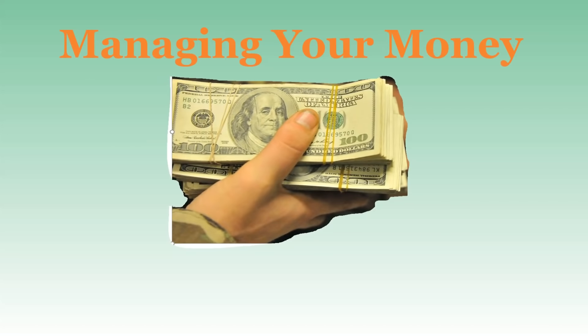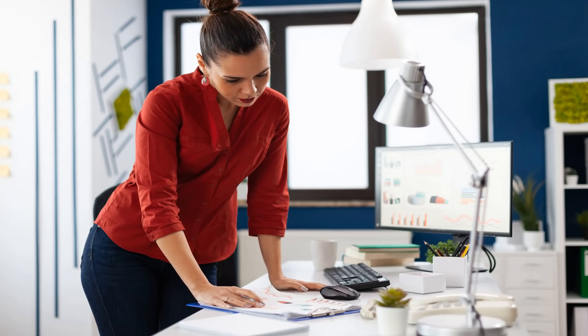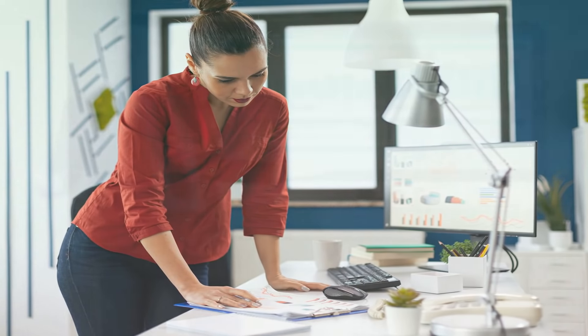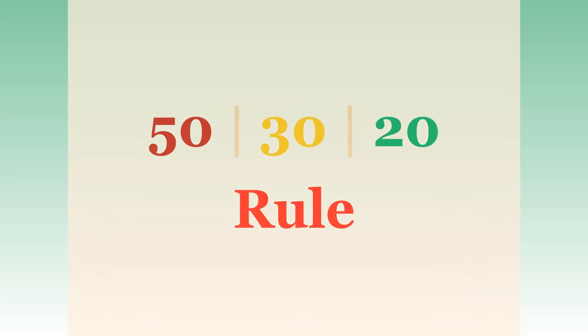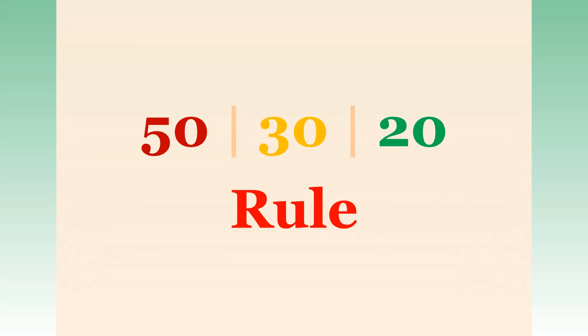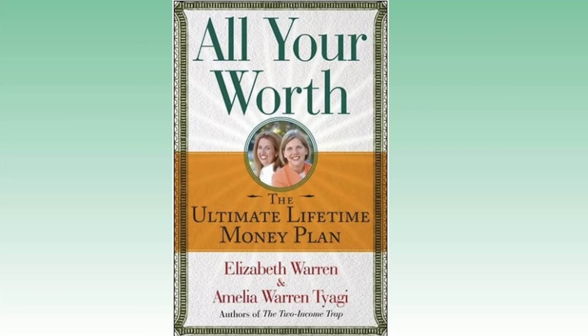Managing Your Money using the 50-30-20 rule. Managing money can become somewhat of a difficult challenge, especially if you don't have any finance or budgeting experience. The 50-30-20 rule is a simple guide to help people manage their income. It was made popular by Senator Elizabeth Warren in her book, All Your Worth: The Ultimate Lifetime Money Plan.